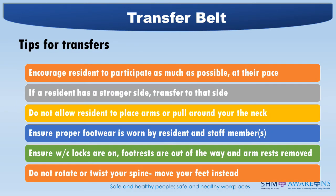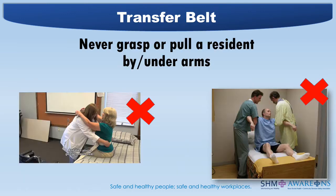Tips for transfers: encourage the resident to participate as much as possible at their pace. If a resident has a stronger side, transfer to that side. Do not allow the resident to place arms or pull around the neck. Ensure proper footwear is worn by the resident and staff members. Ensure wheelchair locks are on, footrests are out of the way, and armrests are removed. Do not rotate or twist your spine — adjust your feet instead. Never grasp or pull a resident under the arms. Consider what is happening in these photos — do you still see this happening?